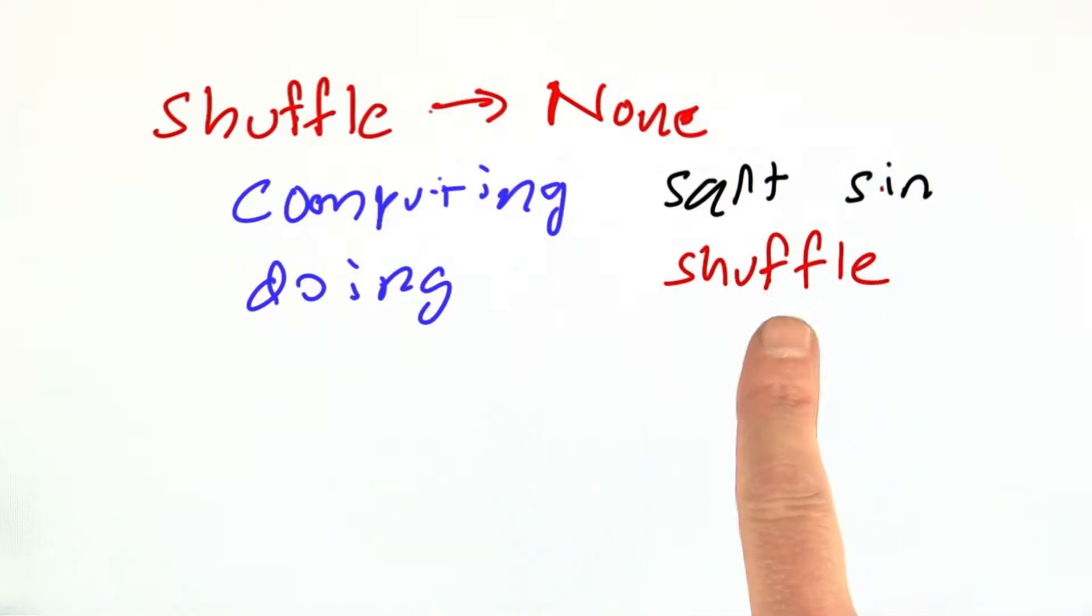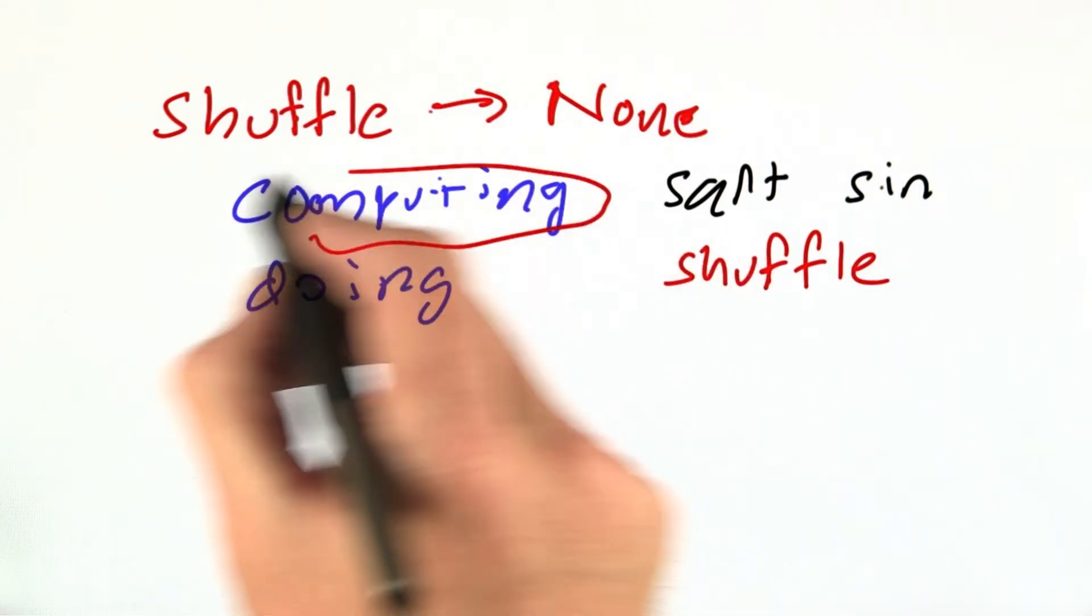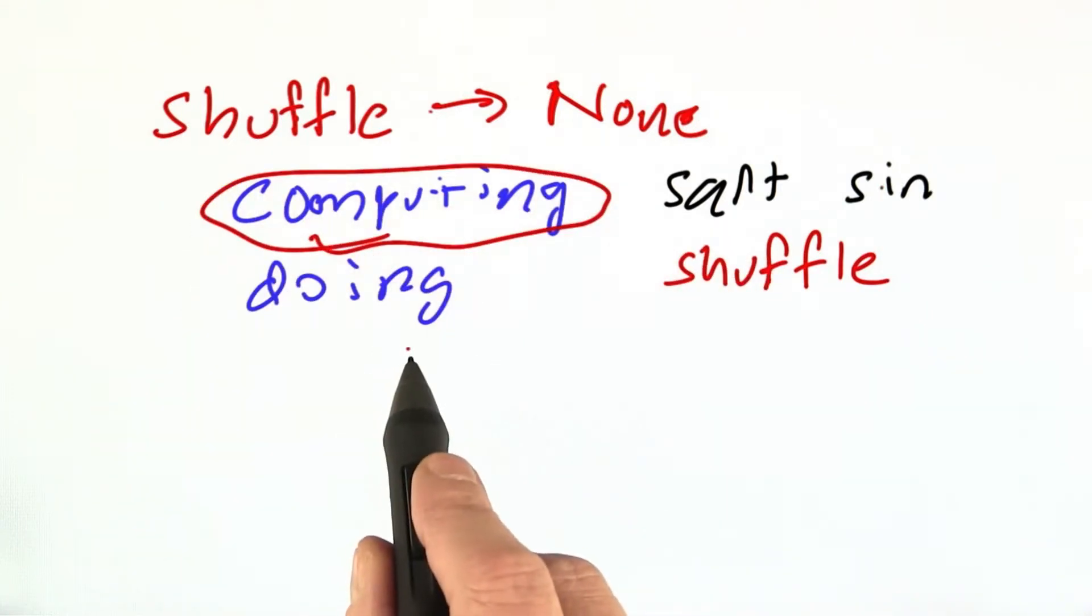I like to talk of them as subroutines rather than functions because they aren't functions in the mathematical sense. They have an effect on the world. Now, you'll see that most of the code that I show in this class is of the computing type rather than the doing type.